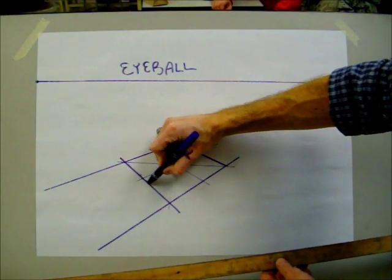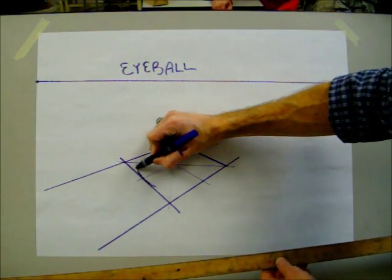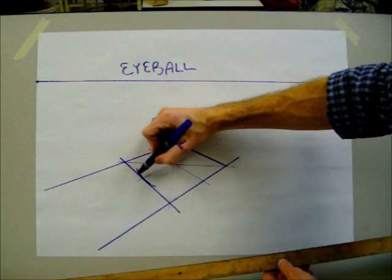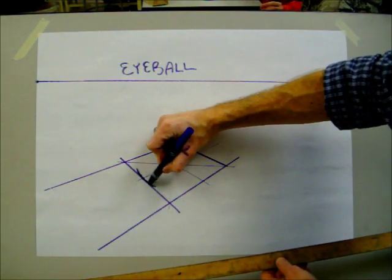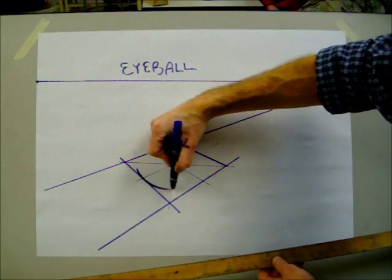I'm going to curve toward that intersection. As my curve comes down, it's going to ride along this line and it's going to curve.